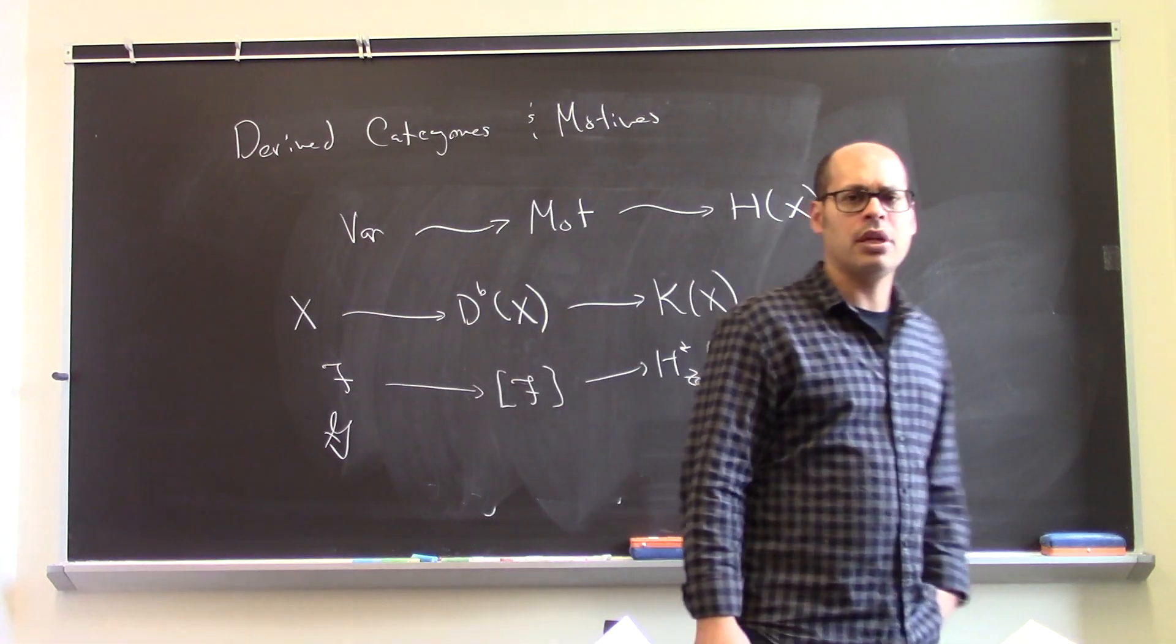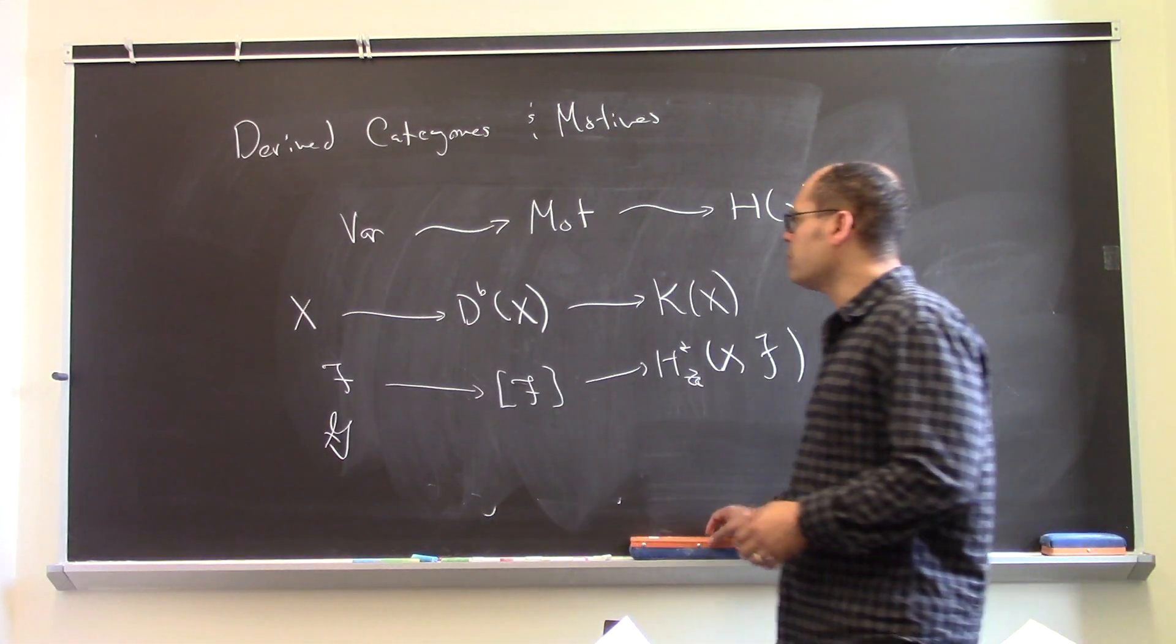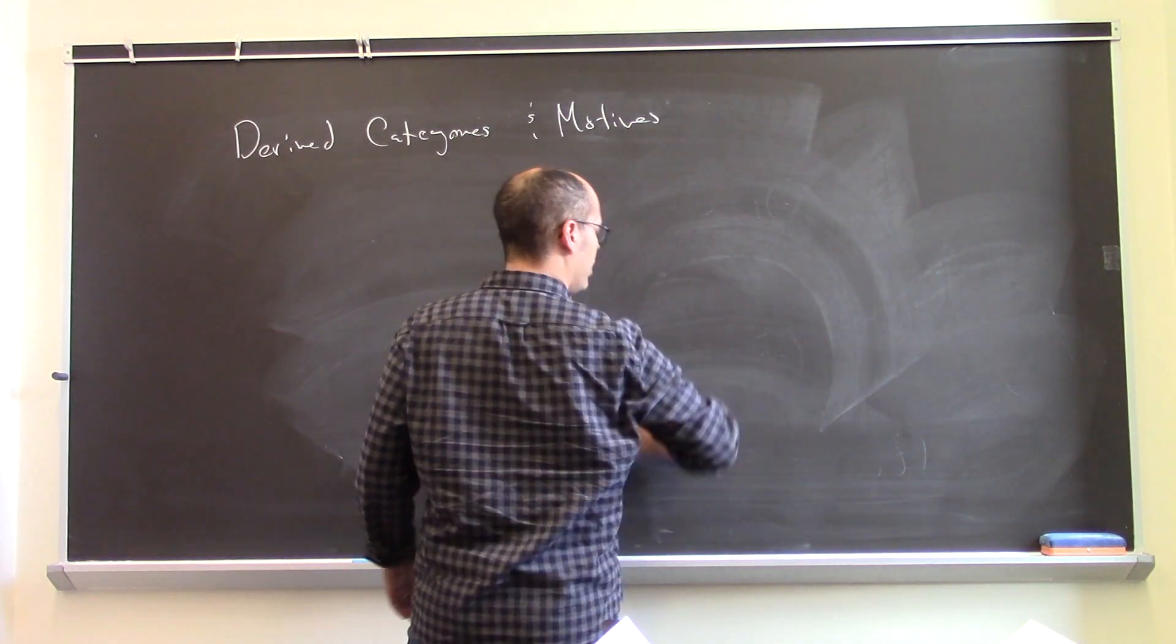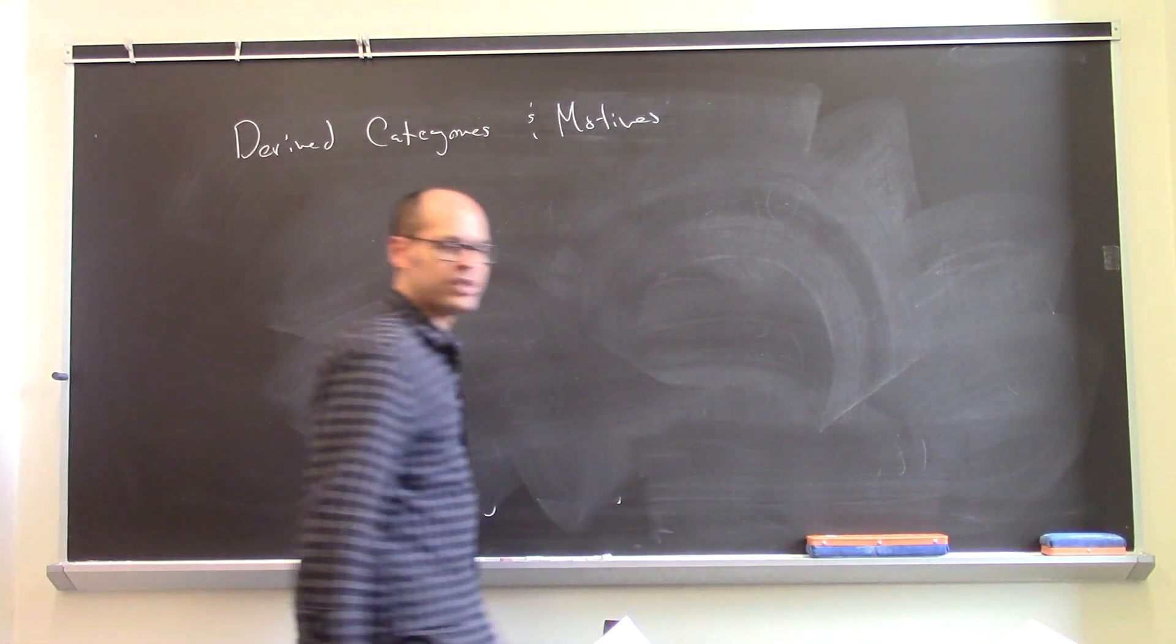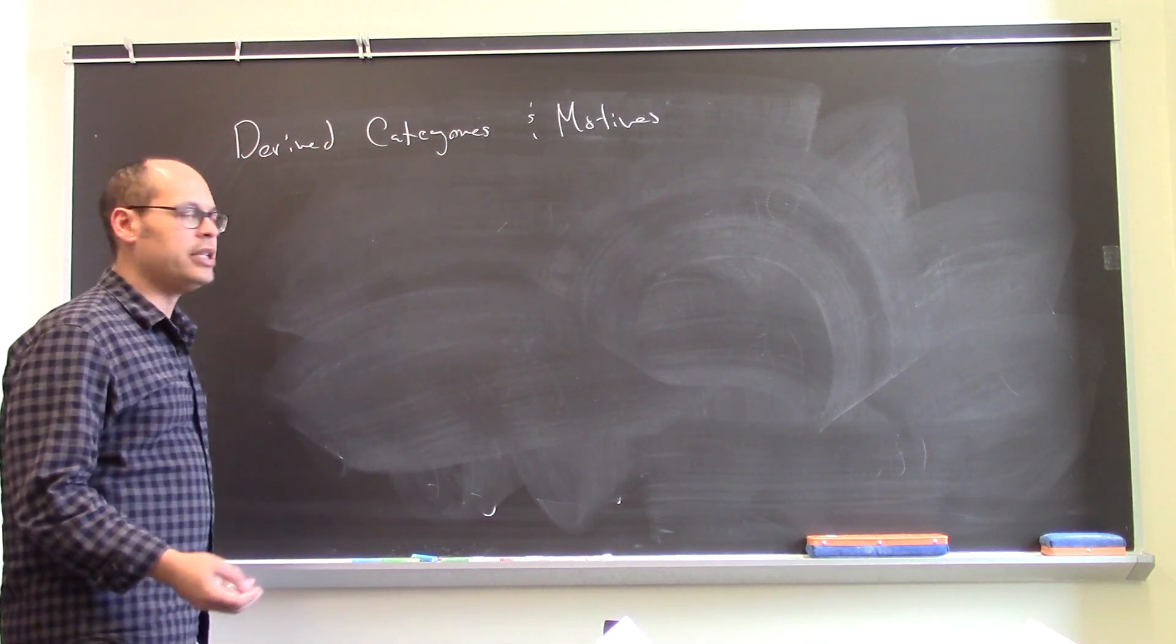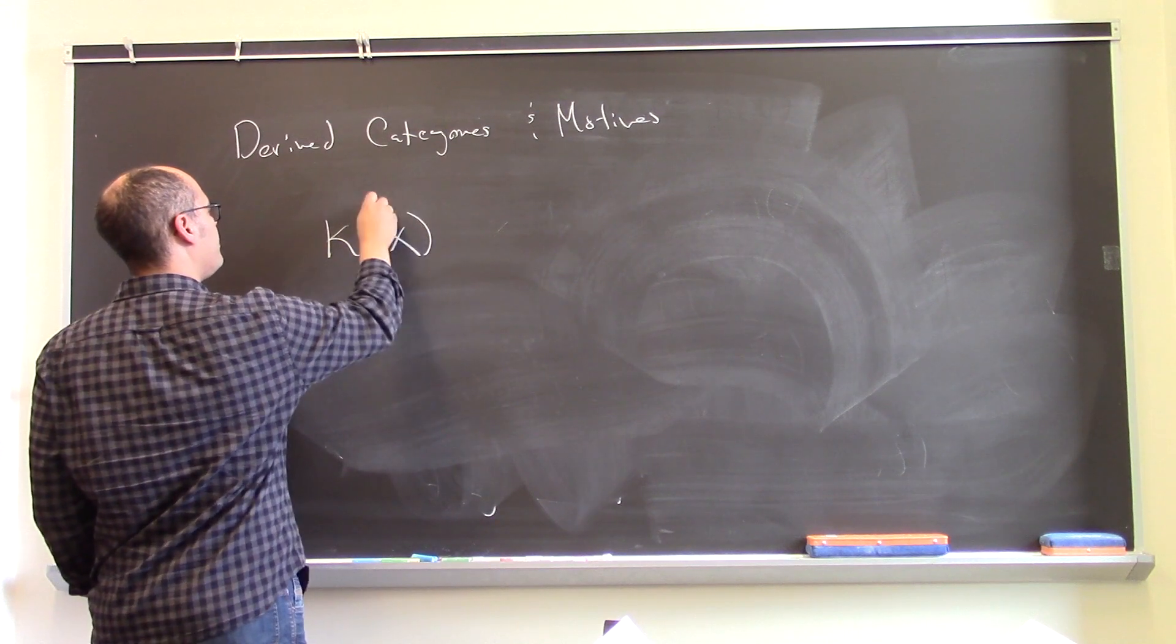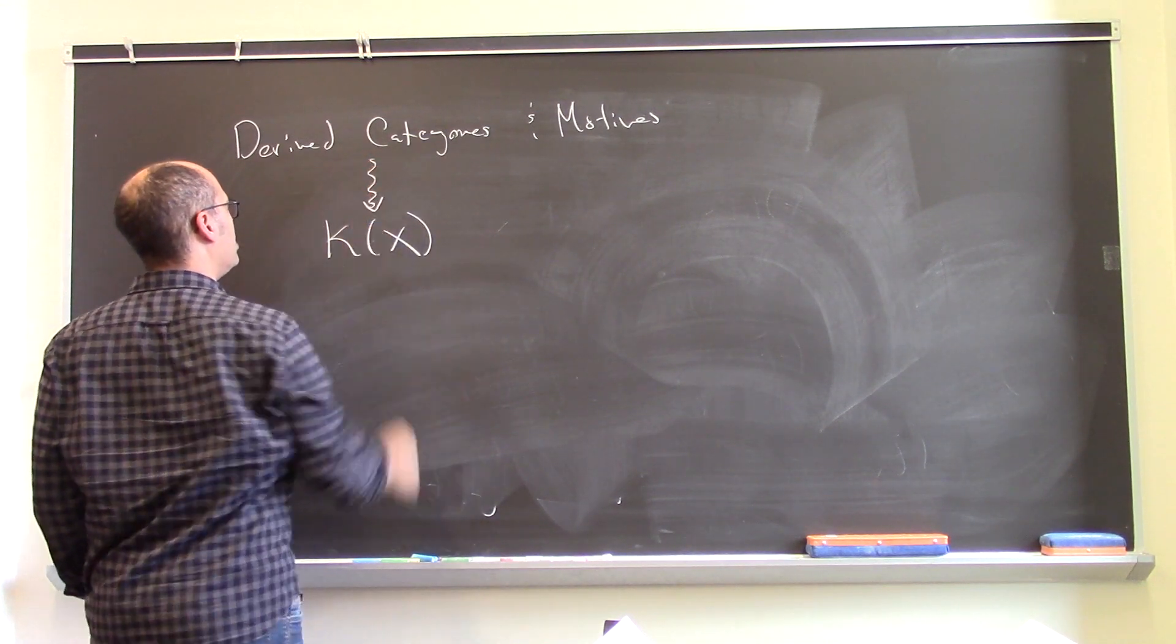Let's think about this a little bit by analogy. So you can think about the derived category as a sort of an enhancement of the K-theory of variety.